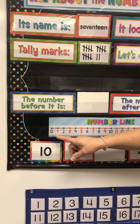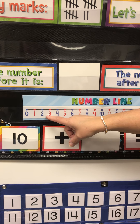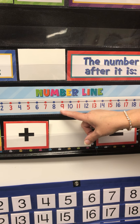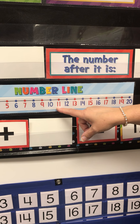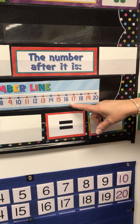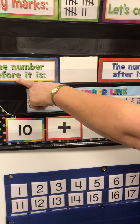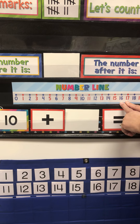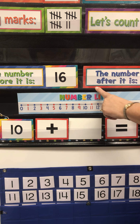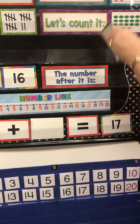We're going to count on the number line. Zero, one, two, three, four, five, six, seven, eight, nine, ten, eleven, twelve, thirteen, fourteen, fifteen, sixteen, seventeen. So what's the number before 17? Sixteen. What's the number after 17? Eighteen.